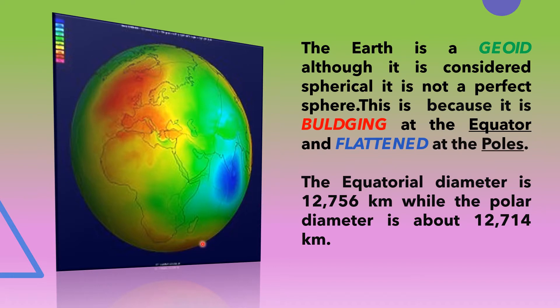The difference between the polar and equatorial diameter is only 42 km, but nevertheless, this small difference makes it look like a geoid or an oblate spheroid, and not a perfect sphere.